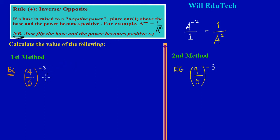Based on what the rule states, when the power is negative, if a base is raised to a negative power, we place one above the base and the power becomes positive. I'm just going to place one above my base, and my base in this case is a fraction—four upon five. Four upon five was raised to the negative three, but because I have placed the one above it, the three becomes positive.